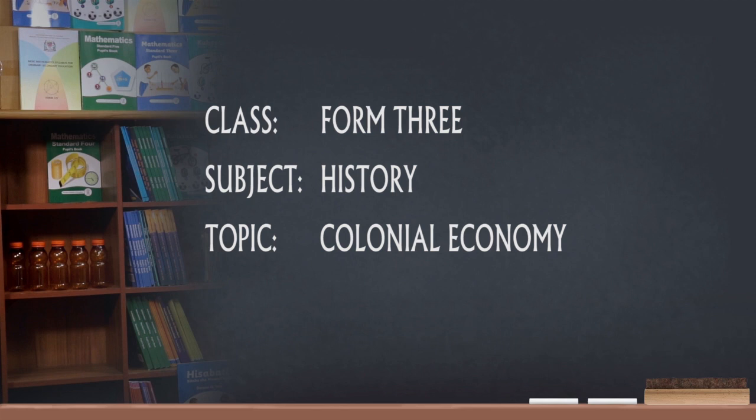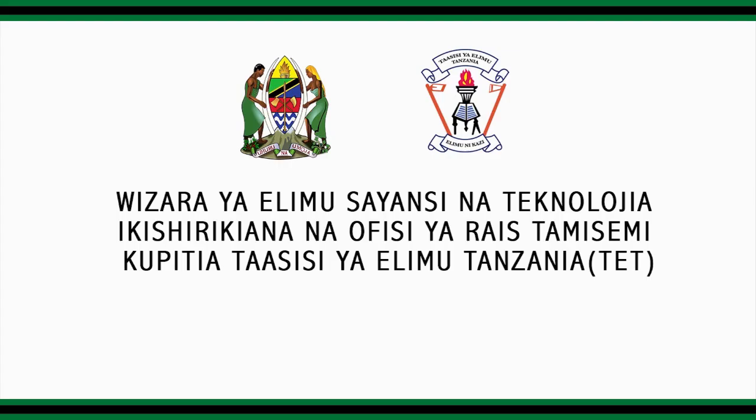Number 3: Colonies were expected to ensure areas for settlement for the European unemployed population. Rapid industrialization in Europe during the 19th century resulted in huge masses of unemployed people as machines replaced manual laborers. Some colonies were selected as settlements for Europeans, such as South Africa, Southern Rhodesia, Kenyan highlands, Algeria, and Northern Rhodesia, among others.